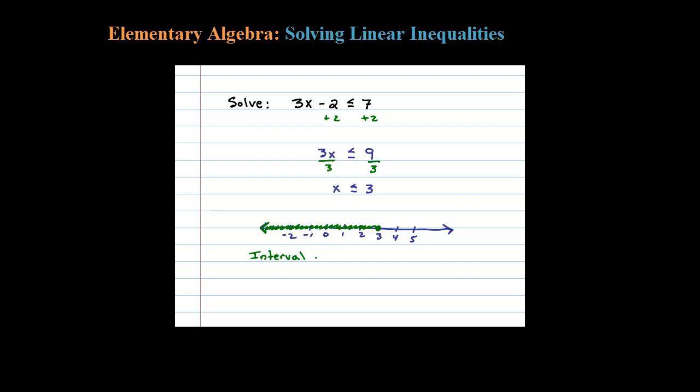Interval notation for this example looks like this: from minus infinity all the way up to 3 with a square bracket. That square bracket indicates that it's inclusive, meaning 3 is included in the solution set.